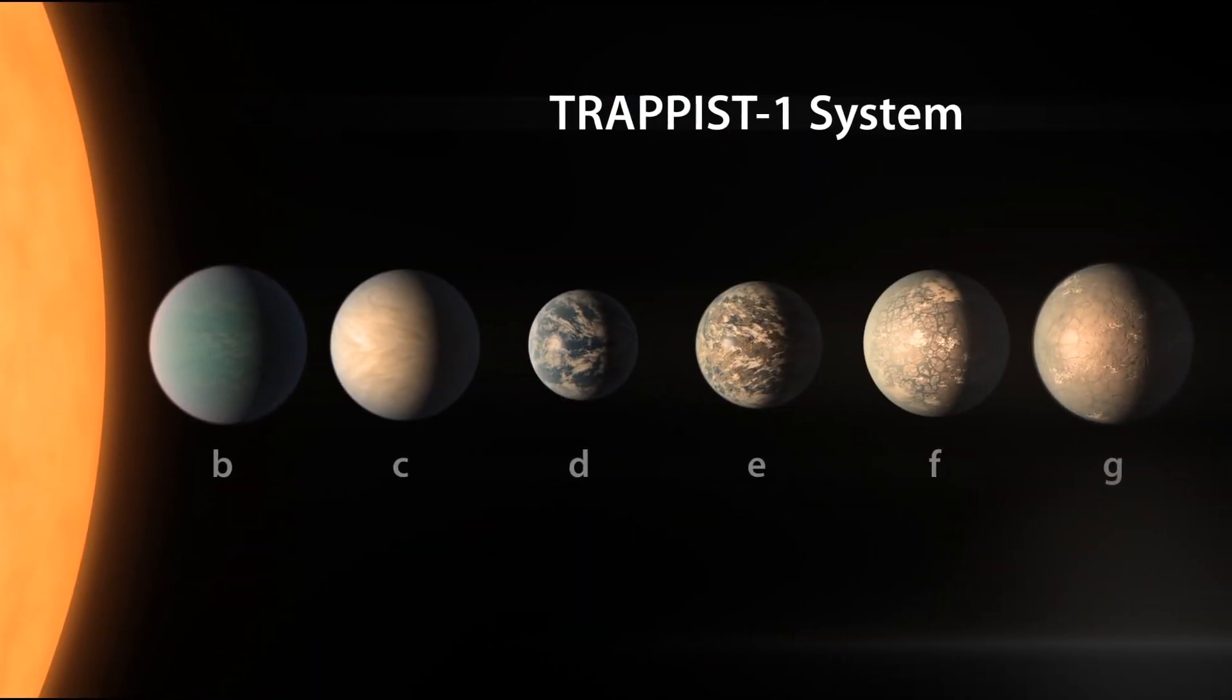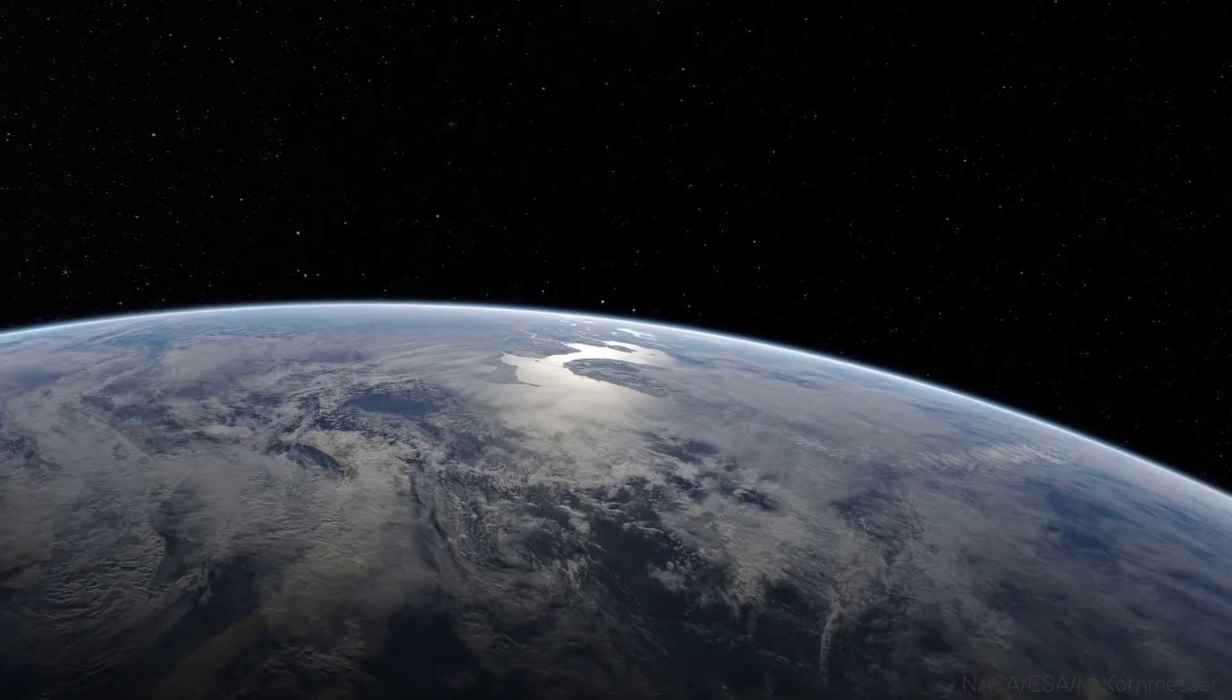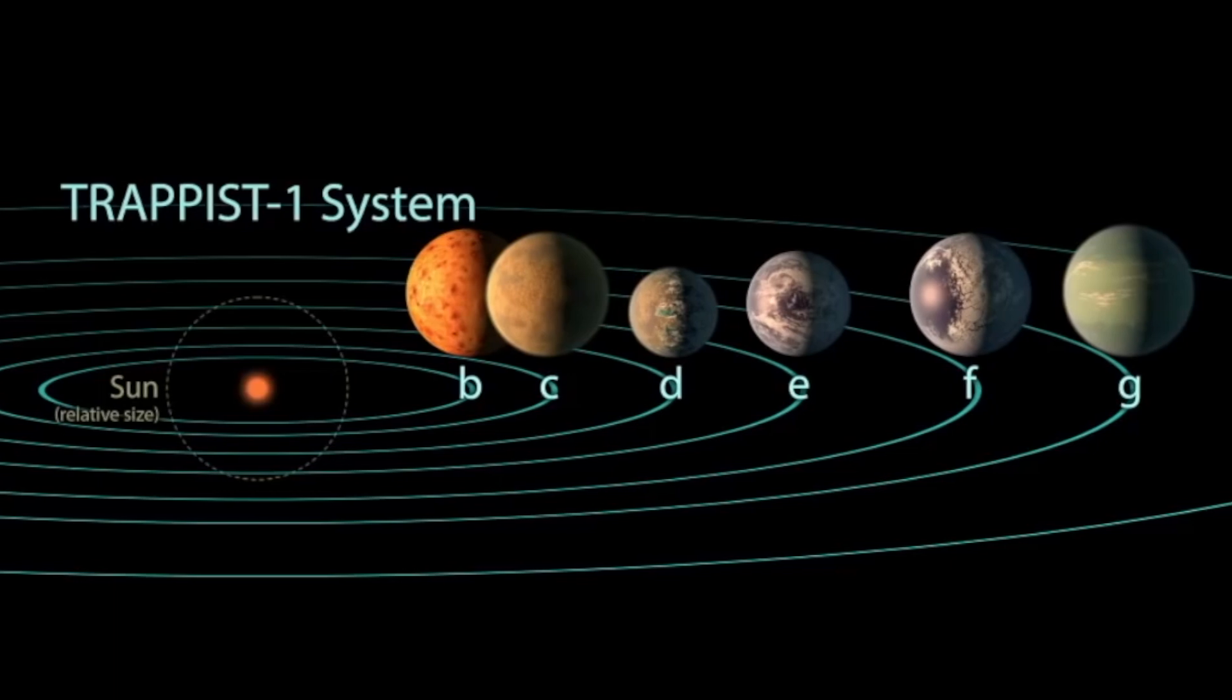The Trappist-1 system, however, is home to an unprecedented seven rocky planets. All seven are also similar in size and strangely close to the same size as Earth.